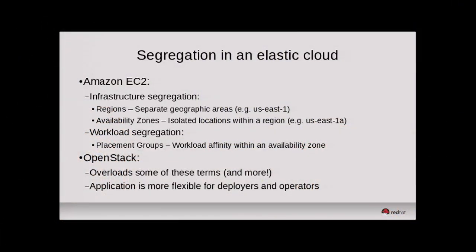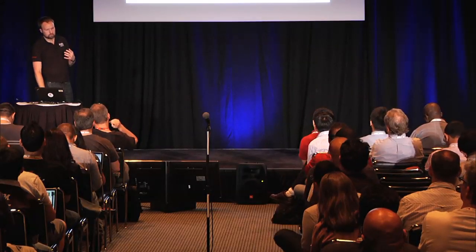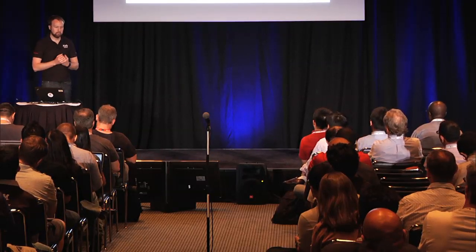In OpenStack, we overload the terms and there's a lot of differences in terms of the flexibility on offer. When we talk about the elastic cloud, one of the key things we often say is that we're abstracting infrastructure-level information from the user. But in this case, users and applications do demand some level of knowledge of failure domains, so that when you're building an application on the cloud, you can plan for failure — ensuring an even spread of workloads in different fault domains so that if any one area disappears, your application is still running somewhere.